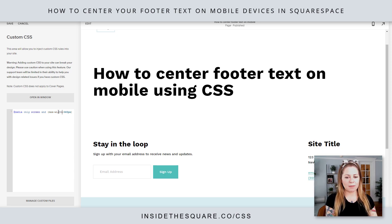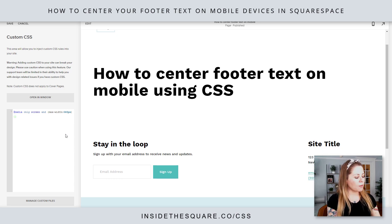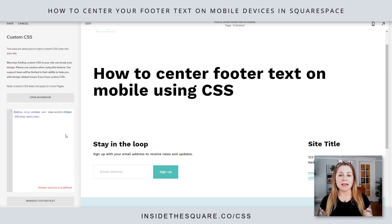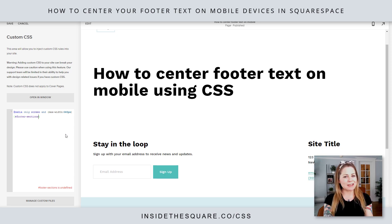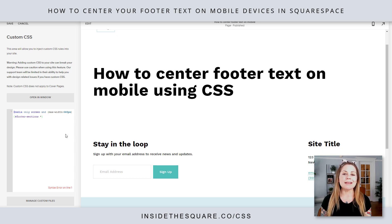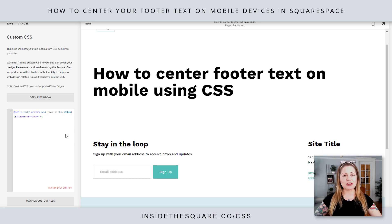Oops, I spelled width wrong — there we go. Alright, so we're going to open up a curly bracket after that and we're going to say hashtag footer-sections. This means the code we're about to apply will be applied to all of the sections in the footer. In 7.1 you get multiple different sections, so this is kind of a catch-all. Now the next thing we're going to do is add an asterisk, which is shorthand in CSS that basically tells the browser to apply this to any type of text you see.